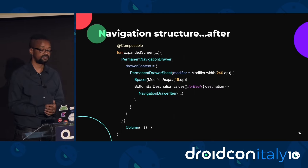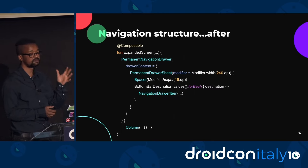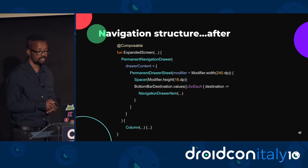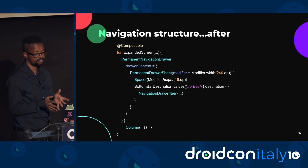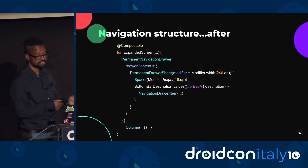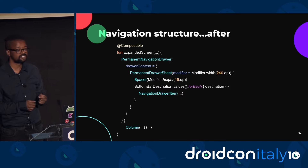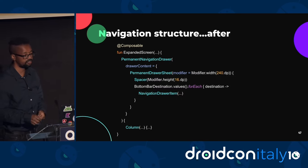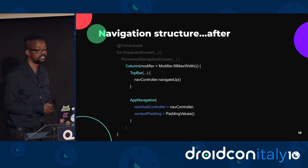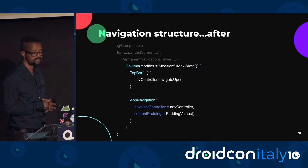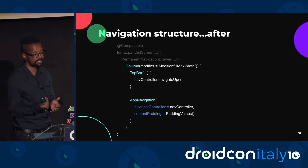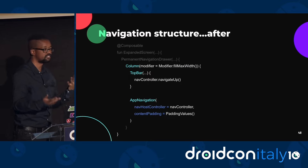For the expanded window size class configuration, I created an expanded screen composable which sets up the material permanent navigation drawer. The permanent navigation drawer is set up by defining the drawer content — in this case the permanent drawer sheet — which contains navigation drawer items for each navigation menu destination. The content for the permanent navigation drawer is a composable passed to it: a column composable containing the top bar and app navigation composable, representing the content of the app.